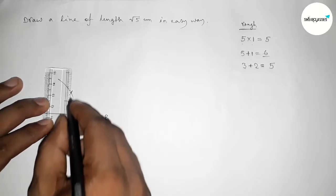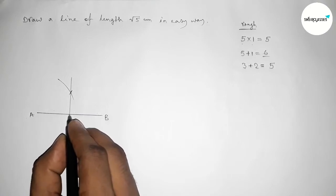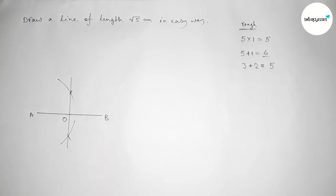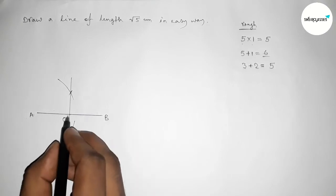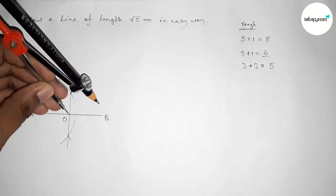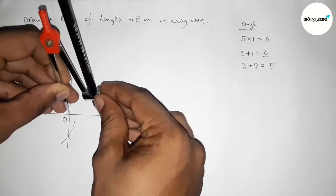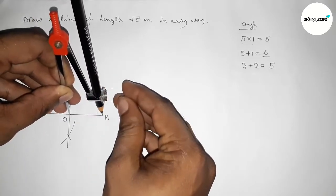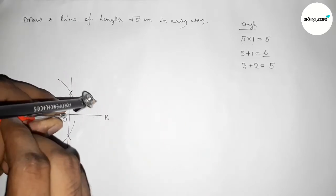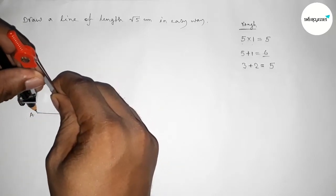Joining the two intersection points, this line bisects AB at point O, so the lengths OA and OB are equal. Now taking the length OB and OA using the compass, we will draw a semicircle through points A and B.